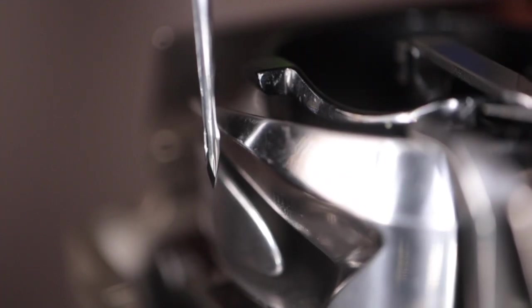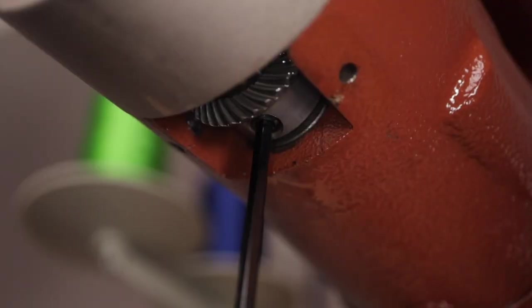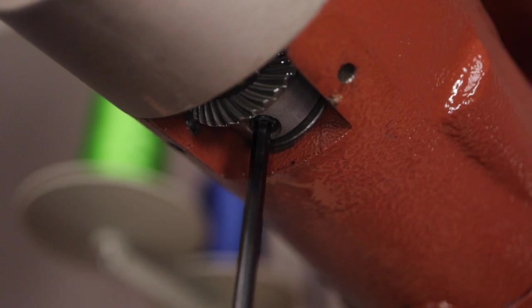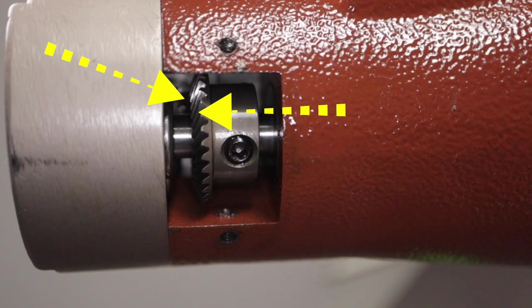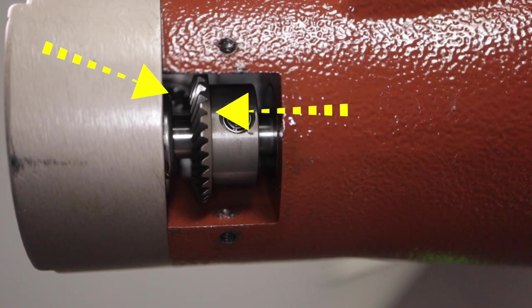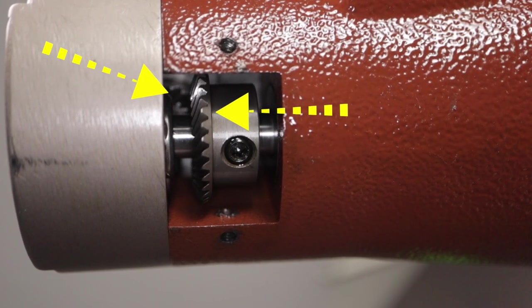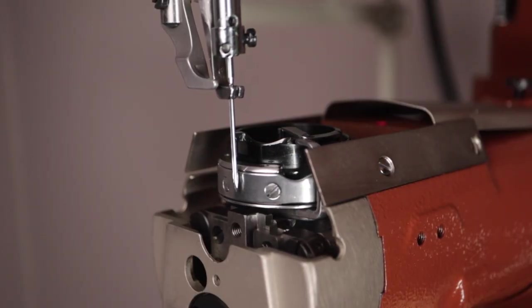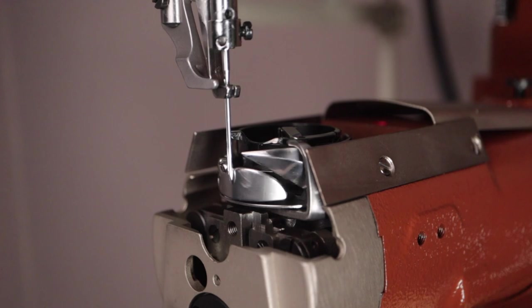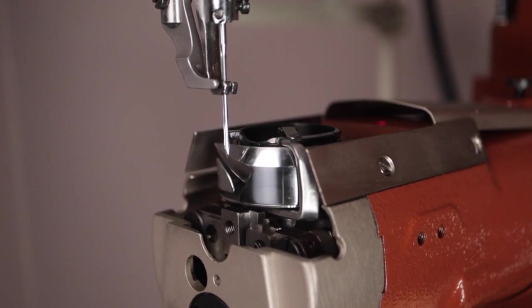So you can see the hook is entering the needle scarf at the perfect time as the needle is ascending upwards. Now tighten down the rest of the allen screws. Make sure that when you are tightening down the screws that the two gears are connected inside the throat of the machine. Go through the motion of completing a stitch by turning the hand wheel and checking the timing to make sure that everything lines up now that all the screws are tightened.